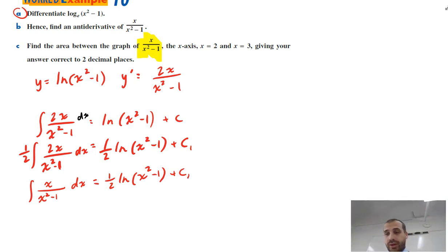Now, why do we have to do all of this? Because we don't know what the graph of x over x squared minus 1 looks like, and we didn't have a good way of integrating it. Now, we're trying to find the area between the graph of that, the x axis 2 and 3.